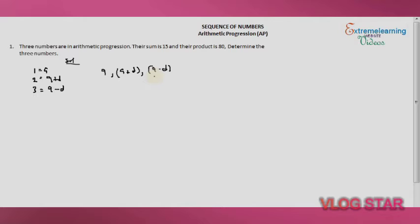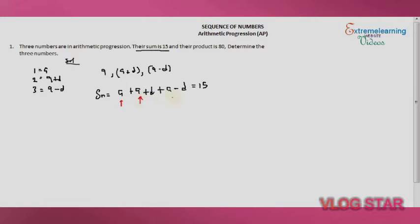Now, the question says their sum is 15. So the sum of the numbers is: (a minus d) plus a plus (a plus d) equals 15. Collecting like terms, we get three a, and the d terms cancel out — plus d minus d equals zero — so we have three a equals 15.